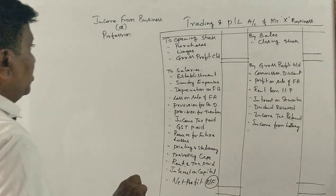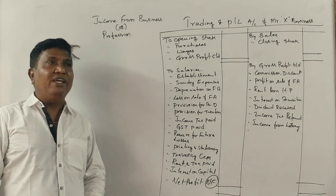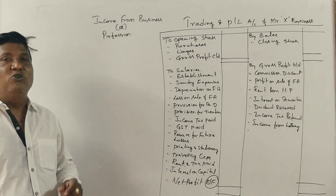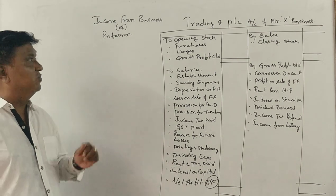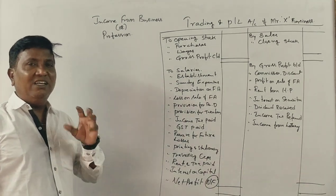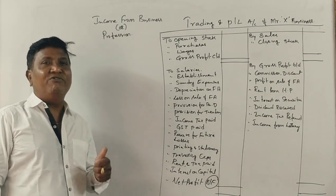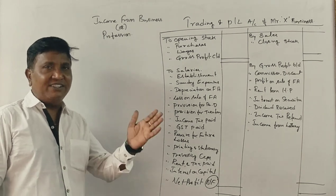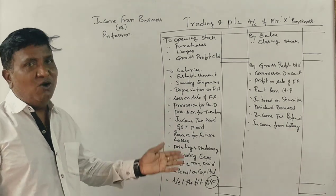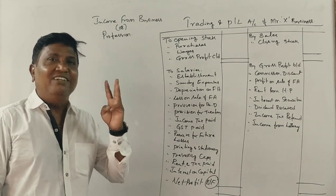Hello students, welcome to Science and Circle. Sixth semester students, 15th of April 2021. We will start the sixth semester classes. Today we will start with Income Tax 2 subject. In income tax, there are five heads of income. In fifth semester, you already covered income from salaries and income from house property. Now in sixth semester, you know three heads of income.